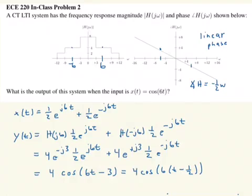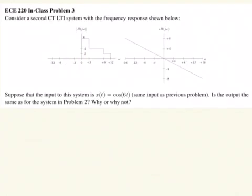Now let's take a look at the next example. This system looks somewhat similar to the one on the previous page, but now we've zeroed out everything for all the negative frequencies. The magnitude for negative frequencies is now zero, and the magnitude for positive frequencies is the same as in the previous example. We have the same input cosine 6t going in, and we're asked: is the output the same as for the system in problem two? Why or why not?